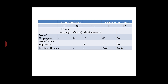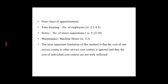The number of stores requisitions is the basis for allocating stores cost to S3, P1, and P2. Because the cost of S3 is higher, it comes after S2 in the step ladder sequence. The basis for apportionment summary: timekeeping uses number of employees, stores uses number of stores requisitions, and maintenance uses machine hours.